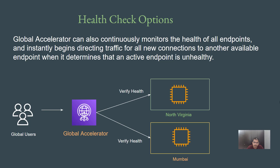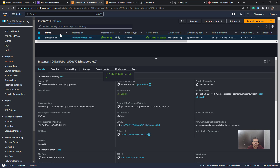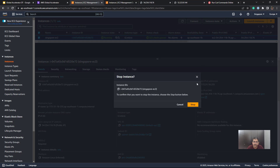One more thing to keep in mind is that Global Accelerator also verifies the health of the endpoint. For example, if there is an EC2 instance in Mumbai associated with the Global Accelerator but the instance is down, and Global Accelerator keeps sending traffic to it, that will lead to a bad experience for users. This is why Global Accelerator periodically verifies the health of the endpoint, and in case the endpoint is not working, it will send the traffic to another endpoint. Let's quickly look at this from a demo perspective — let's stop the EC2 instance in the Singapore region.